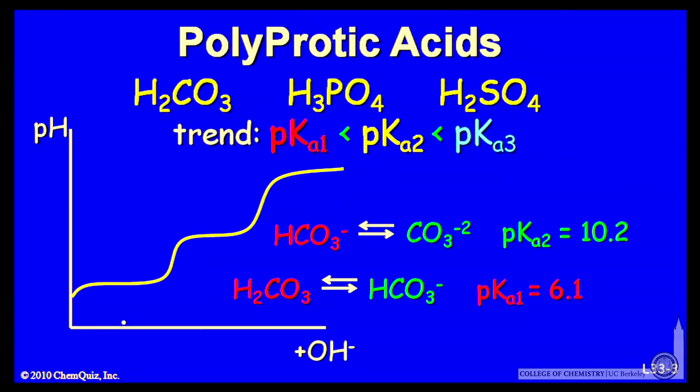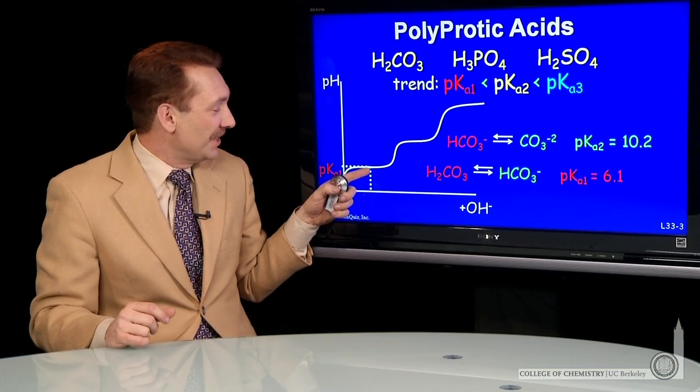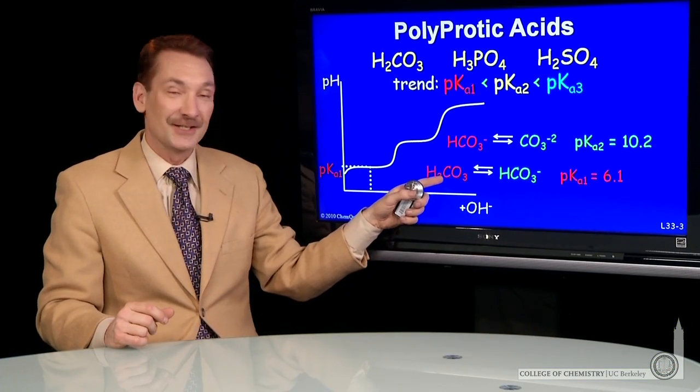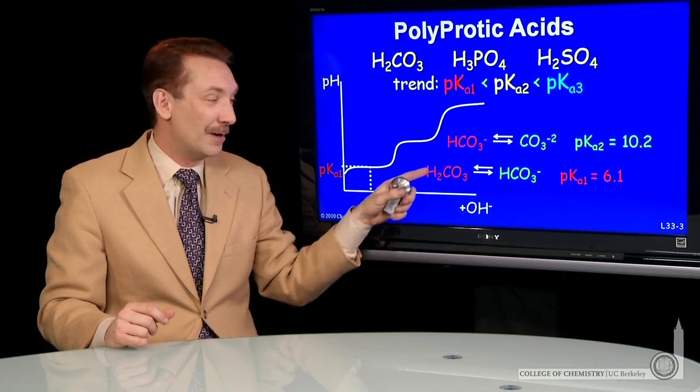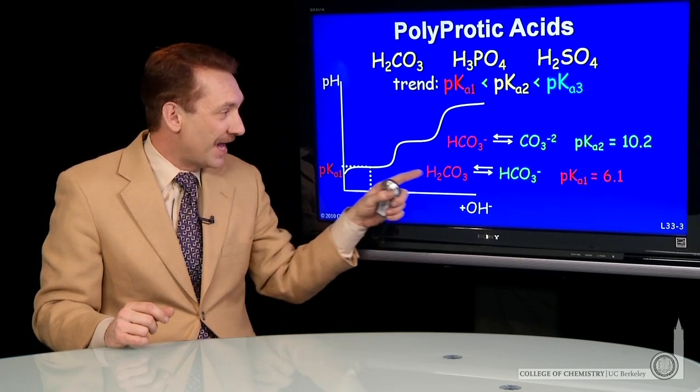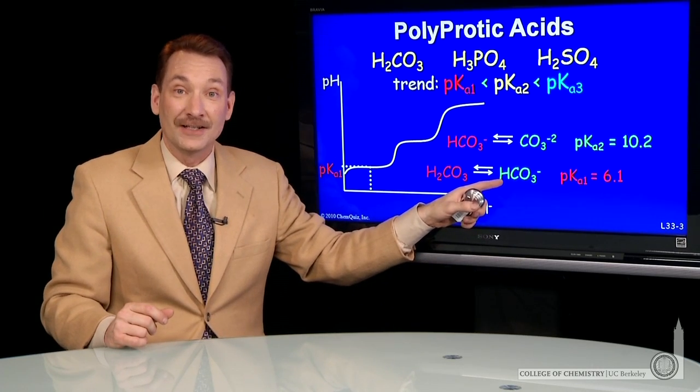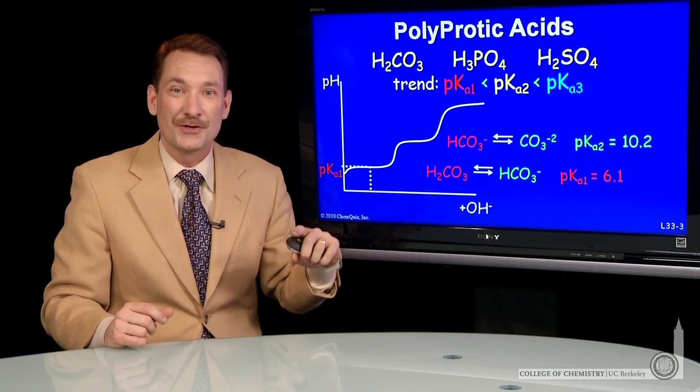So what I have here is half equivalence, halfway to the first equivalence point. That's where the pH will be equal to the pKa. pH is below that, the acid form here dominates, doubly protonated. Above that, you have the singly protonated species, one proton removed.